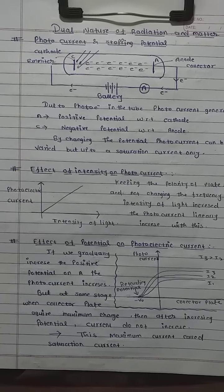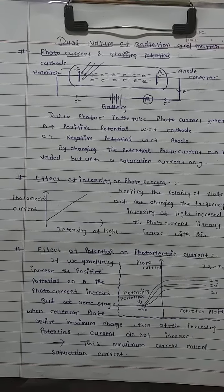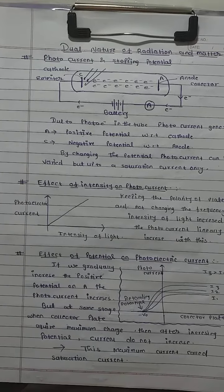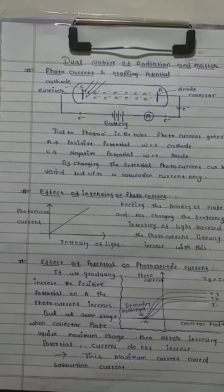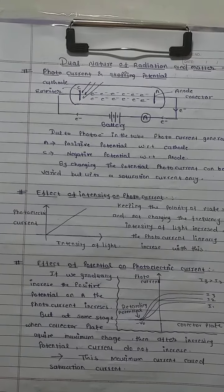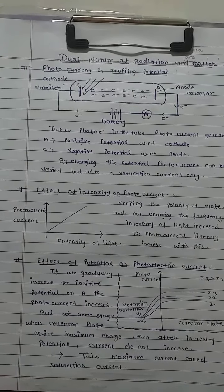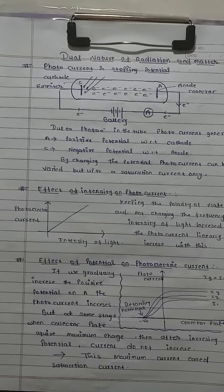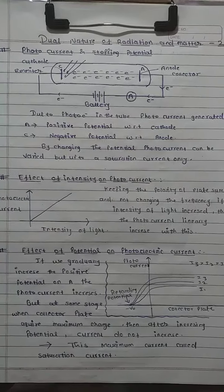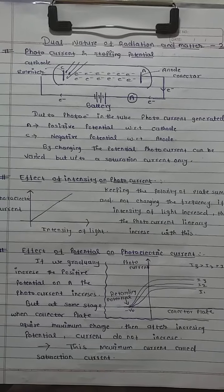Let us start with an experiment of photocurrent and stopping potential. A glass tube is given in which a cathode and anode are present. The cathode is connected to the negative side of the battery and the anode to the positive side. The cathode is bombarded by radiation, causing electrons to emit. Because the anode has positive potential, electrons are attracted towards it, generating a current called photocurrent — the current generated due to transfer of photoelectrons from cathode to anode.